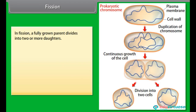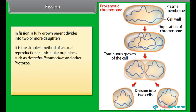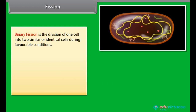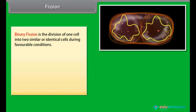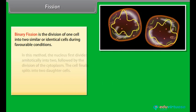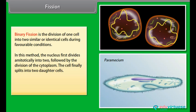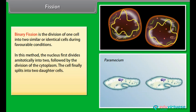In fission, a fully grown parent divides into two or more daughter cells. It is the simplest method of asexual reproduction in unicellular organisms such as amoeba, paramecium, and other protozoa. Fission is of two types: binary fission and multiple fission. Binary fission is the division of one cell into two similar or identical cells during favorable conditions. In this method, the nucleus first divides amitotically into two, followed by division of the cytoplasm, and the cell finally splits into two daughter cells. Examples include bacteria, yeast, euglena, amoeba, and paramecium.